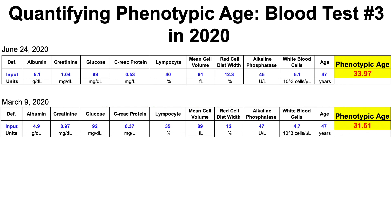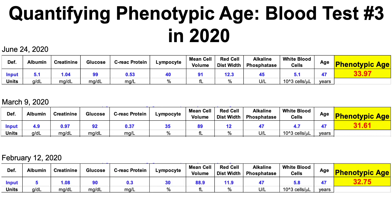Compared to my March measurement, my phenotypic age was significantly younger — about two and a third years younger than in June. I also measured in February, which was a little worse than the March measurement but better than June, at 32.75 years. One blood test is nice, but from my experience — I've had about 25 blood test measurements over the past five years — measuring six times a year is important for seeing your own trends.